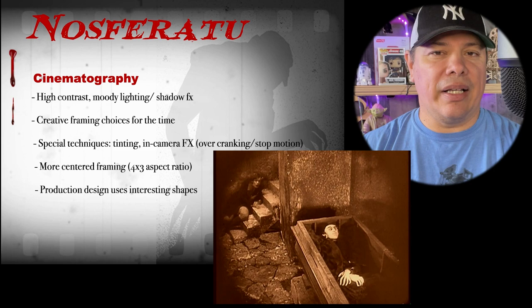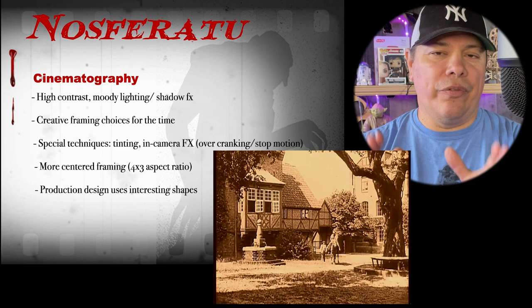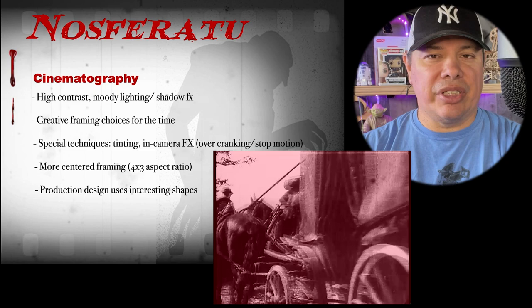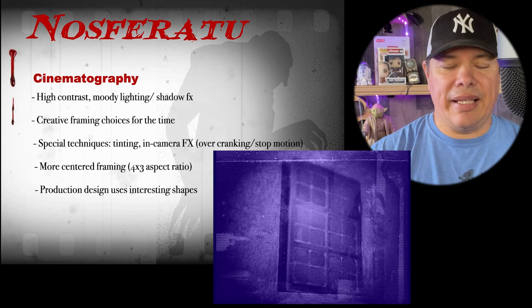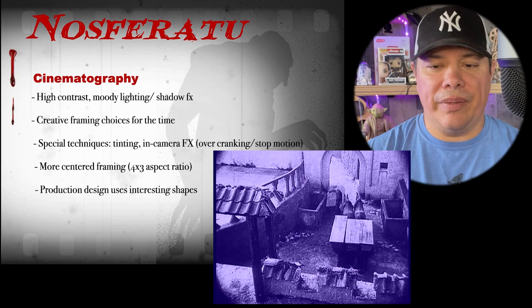Next up, we've got some of the tinting. First, you'll see the daytime tinting. Then there's some sunset tinting, which is kind of orangish red. And then we have some blue tinting for all the night stuff. So take a peek at that and look for that in the film. Let me know whether it helps you decipher what time of day it is in the movie.